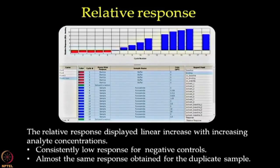Before starting with the data analysis on kinetics of the interaction between carbonic anhydrase and furosemide, we would like to show the bar graph obtained from the sensorgram which represents the relative response for report point binding against cycle number for samples. As reflected in the graph, the relative response displayed linear increase with increasing analyte concentration with consistently low response for negative controls shown by cycle 7, 12 and 17, and almost the same response was obtained for duplicate sample, 2.5 micromolar, shown by cycle 13 and 18.